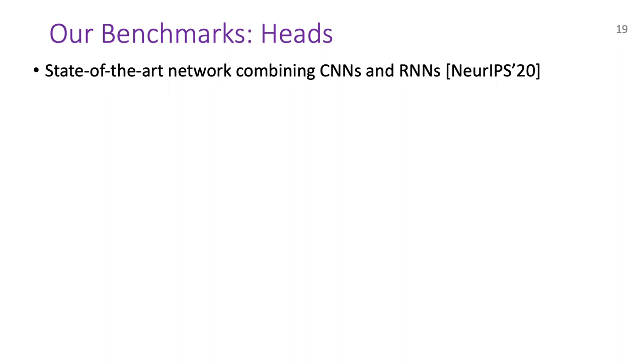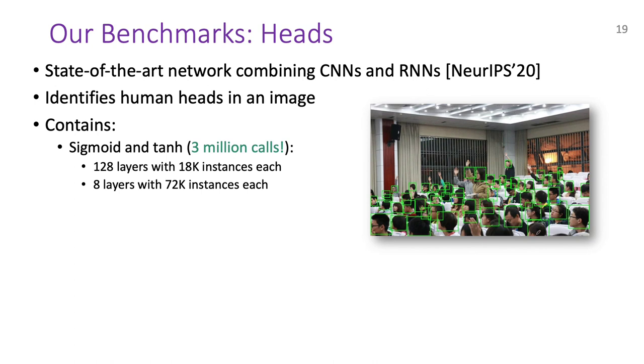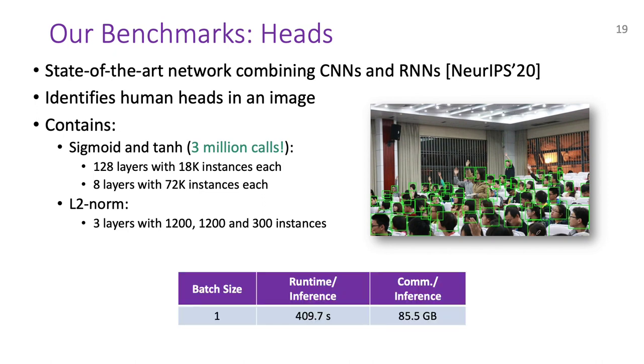Next, we have the heads benchmark, which evaluates a state-of-the-art network combining CNNs and RNNs. The task of this network is to identify human heads in an image. It contains 3 million sigmoid and tanh calls, which is 3 orders of magnitude more than the benchmarks considered in prior works. These calls are distributed across 136 layers, with some layers containing 72,000 instances. This network also has 3 L2 norm layers containing up to 1200 instances of reciprocal square root. It takes us just 7 minutes and 85.5 GB of communication to evaluate this huge neural network. Lastly, we observed that around half the time in this network is spent on sigmoid and tanh, despite our large improvements. This clearly signifies the importance of having efficient implementations for math functions.